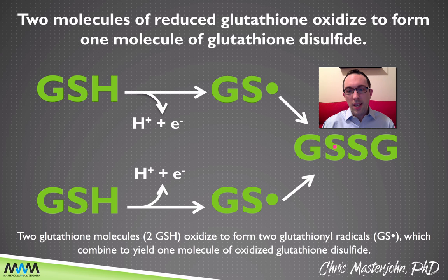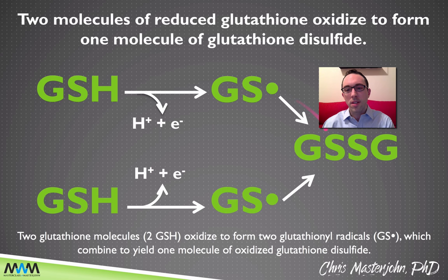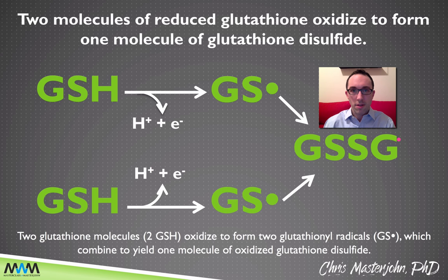The reason that this is called GSSG and not GGSS or something else is because we're demonstrating visually an abbreviation of what the actual chemical structure looks like. Literally, the sulfur of one glutathione is joined to the other sulfur of the other glutathione. It's a mirror image where you could cut it in half and see that sulfur is bound to sulfur, and then behind one sulfur is the whole rest of the glutathione molecule, G, and behind the other sulfur is the whole rest of the other glutathione molecule, the other G.